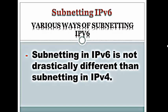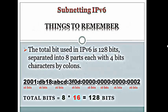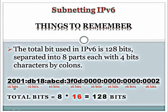Subnetting in IPv6 is not drastically different than subnetting in IPv4. Before subnetting in IPv6, we have to keep something in mind. The total bits used in IPv6 is 128 bits. You can see this is an IPv6 address, and each address is 16 bits. There are 8 groups of 16 bits in IPv6. So if you multiply 8 by 16, you will get 128 bits. The total bits used in IPv6 is 128 bits, separated into 8 parts with each 4-character group separated by colons.